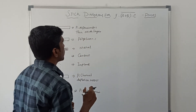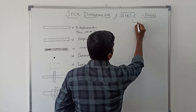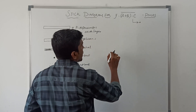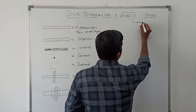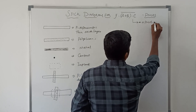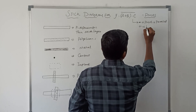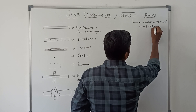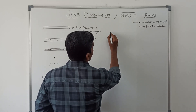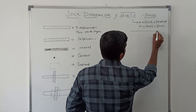Now I am going to draw the PMOS logic for the given boolean expression. In this boolean expression, before drawing the logical diagram, first I will write the rules. When a dot operator is present, PMOS connects in parallel. When a plus operator is present, PMOS connects in series. Using these two rules, I am going to draw the logical diagram.